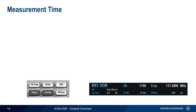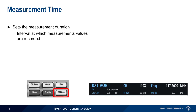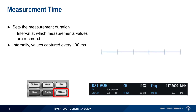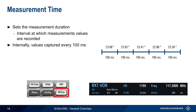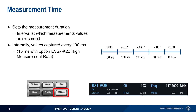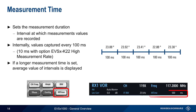The last general parameter is measurement time, which sets the measurement duration — specifically, the interval at which measurement values are recorded. Internally, this interval is 100 ms, although it can be reduced to 10 ms with the K22 high measurement rate option. It's possible to configure a longer measurement time, in which case the average is reported. For example, a 500 ms measurement time means that five 100 ms measurement intervals are averaged and reported.